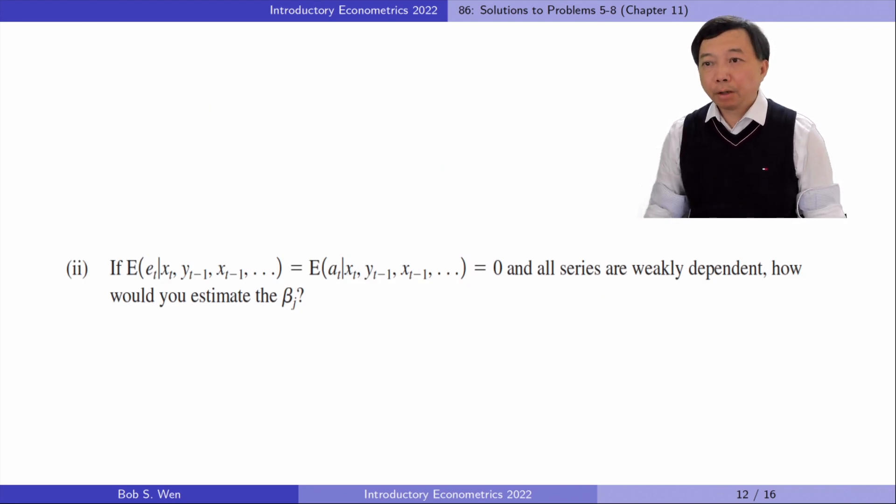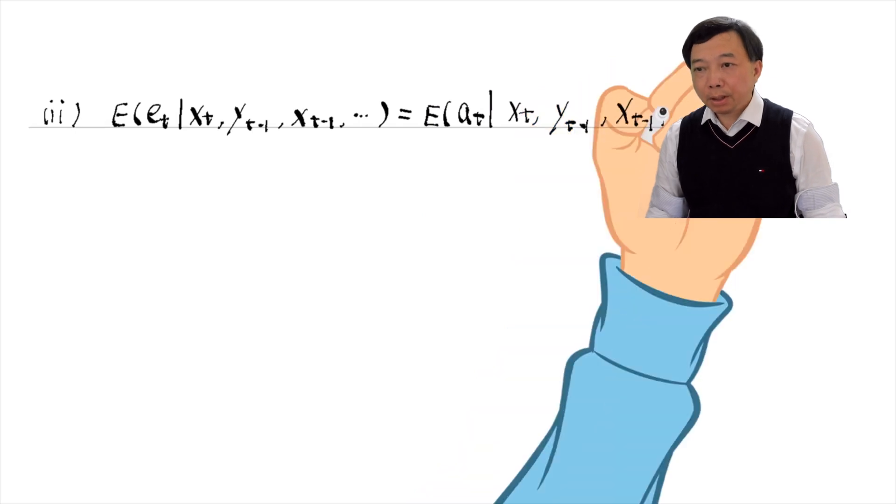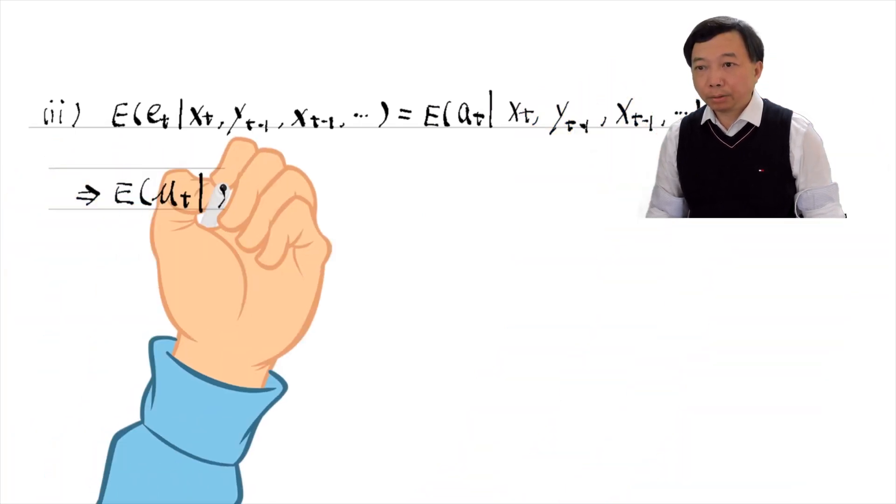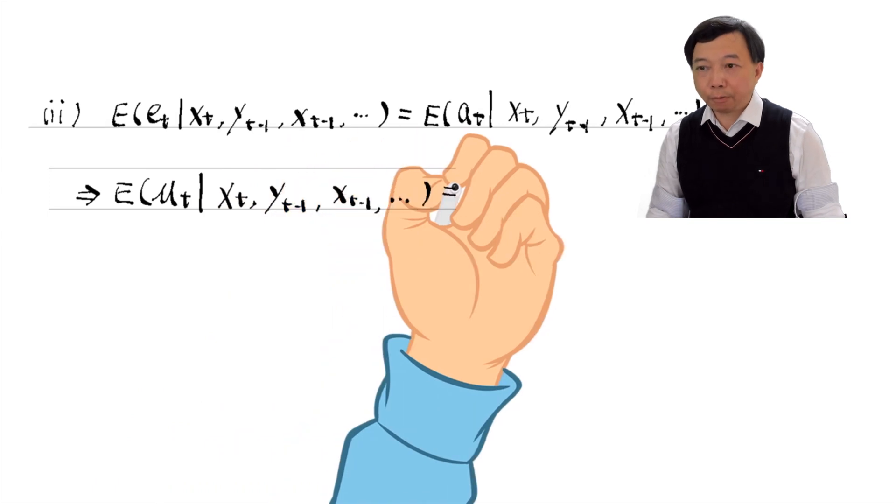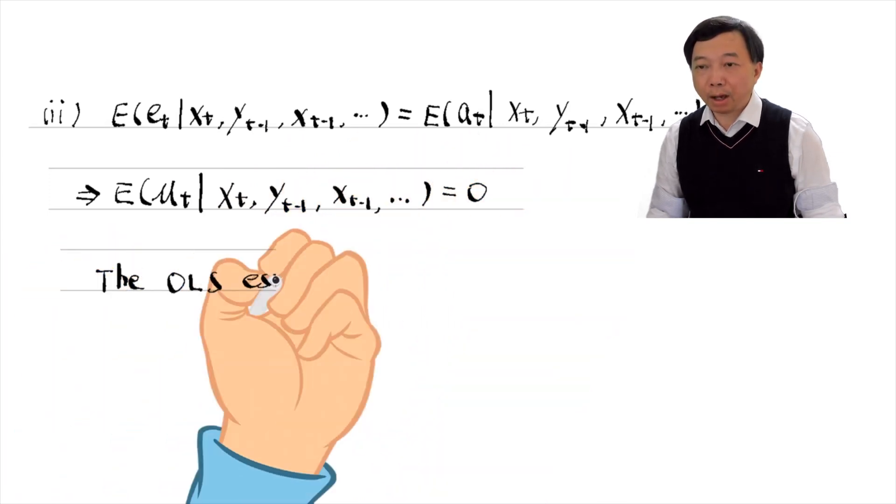In part 2, if the conditional expected values of epsilon and alpha are 0 and all series are weakly dependent, how would you estimate the betas? The OLS method is appropriate. Because epsilon and alpha have 0 expected values, the conditional expected value of mu is 0. The OLS estimates are consistent.